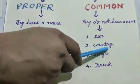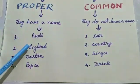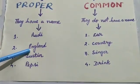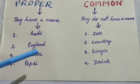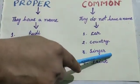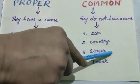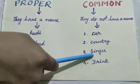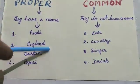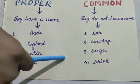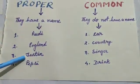'Country' — any country in general — it is common noun. But if the name of the country is given, it becomes proper noun. In the same way, 'singer' — if only 'singer' is written and no specific name of the singer is given, it is called common noun. But if I add a name like Justin or Sonu Nigam or whoever — a particular name — then it becomes proper noun.